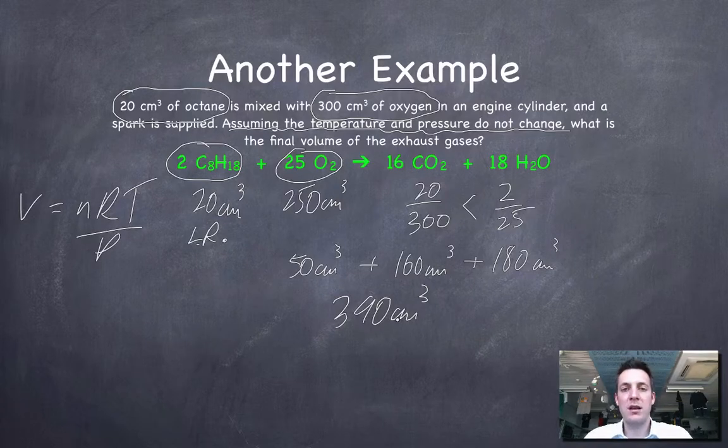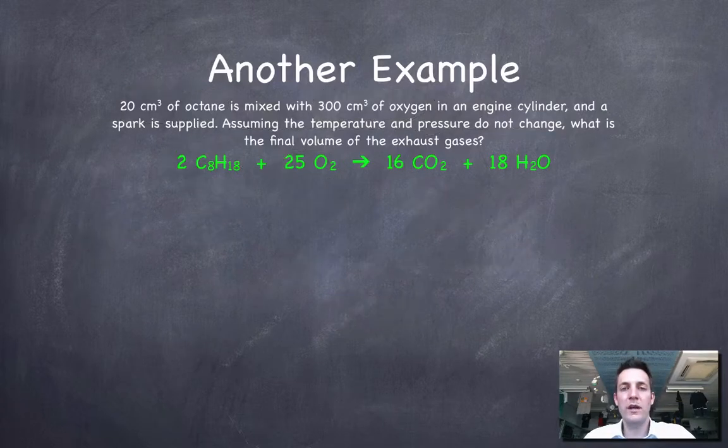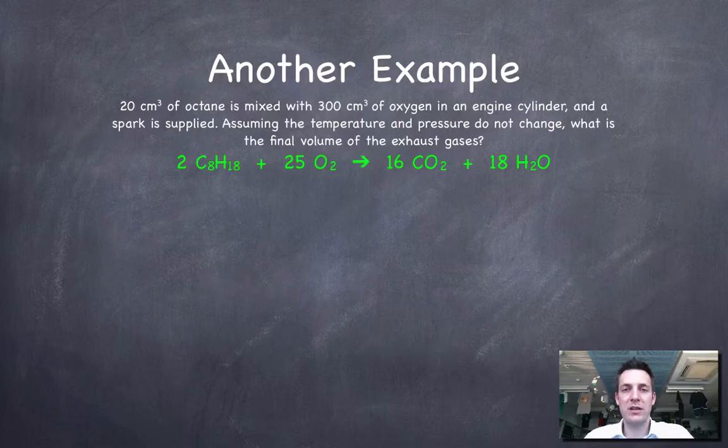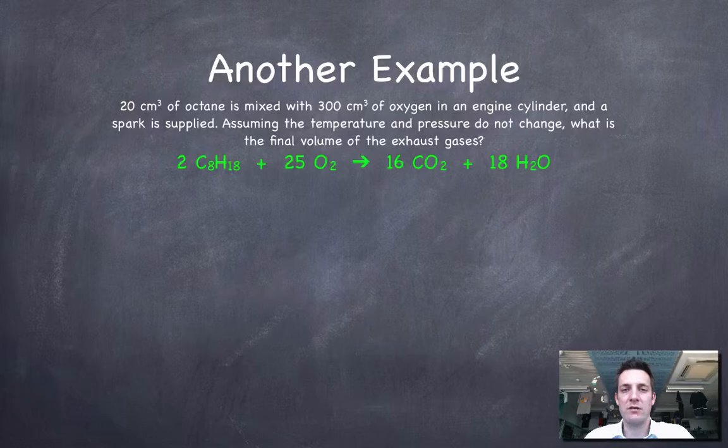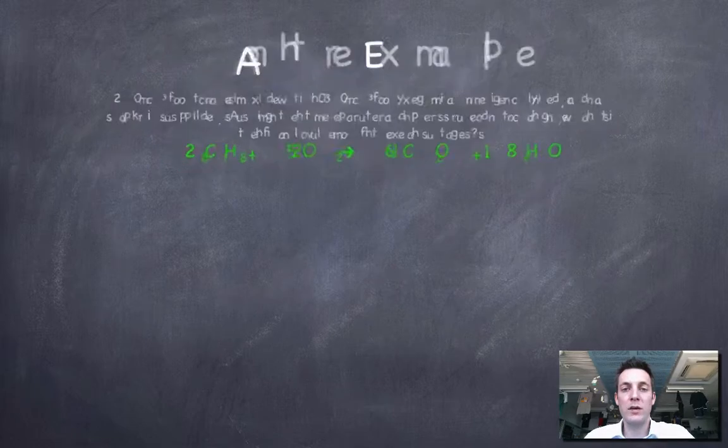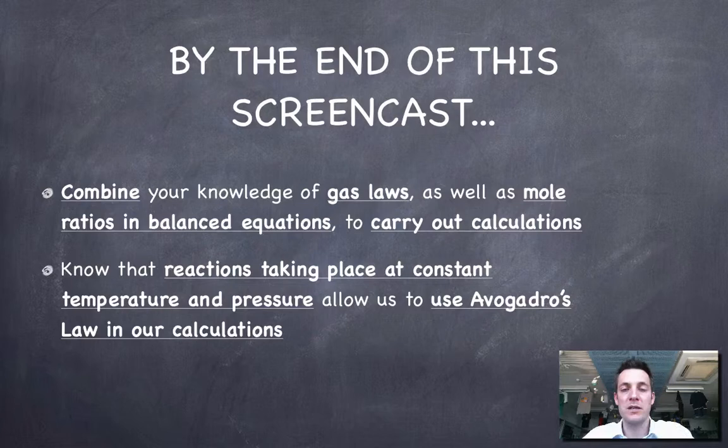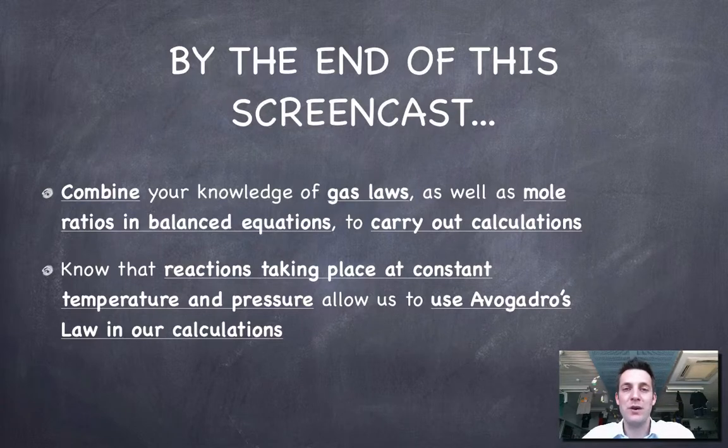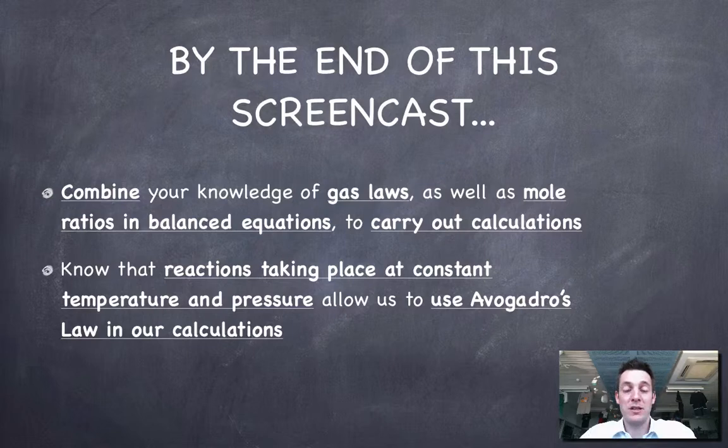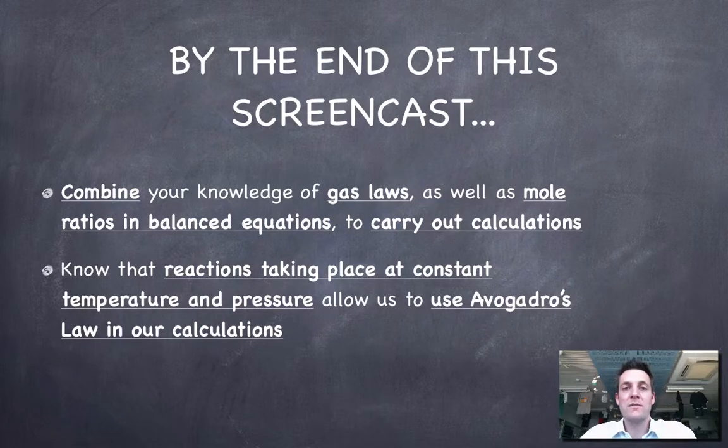So we've seen there, in that last example, a way that we can shortcut the kind of calculating things using the ideal gas law, using Avogadro's law. We won't always be able to do that because the conditions won't always be the same. But hopefully we've got a few tools now to attempt some of these problems. It's absolutely crucial that you practice some of these things so that you actually learn how to do them. Seeing me do a couple of examples might hopefully make you understand how to do them, but it's not going to teach you how to do them. So if you've got any questions, ask as soon as you can. Come and see me if you like, or post a question on YouTube.